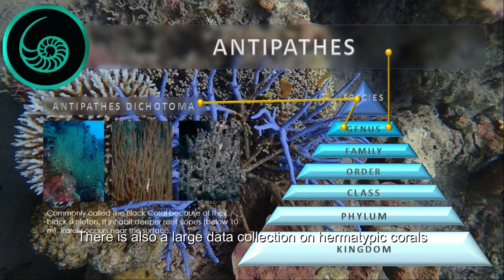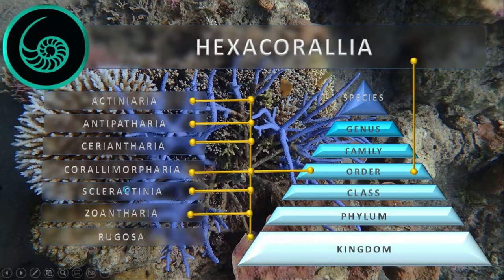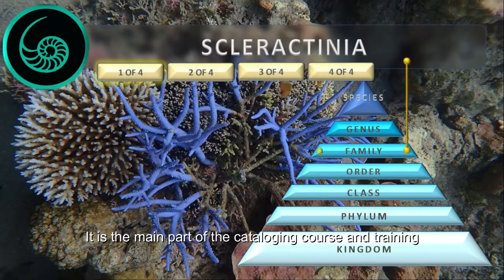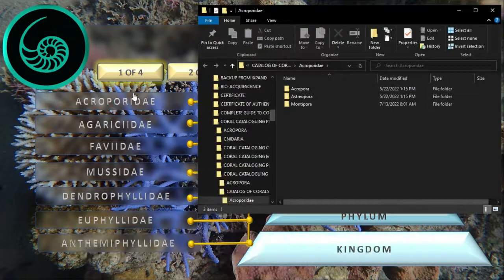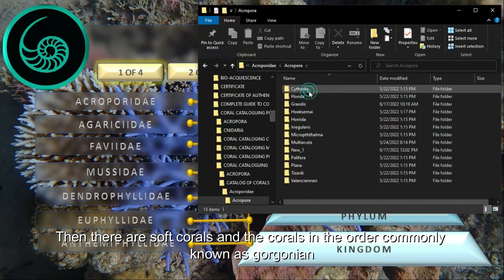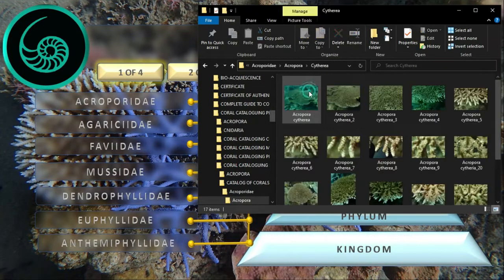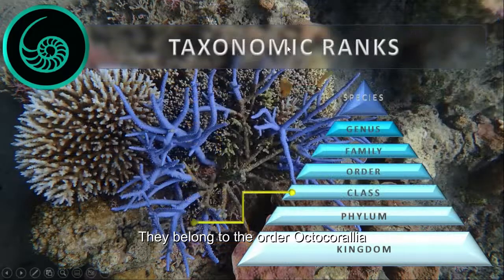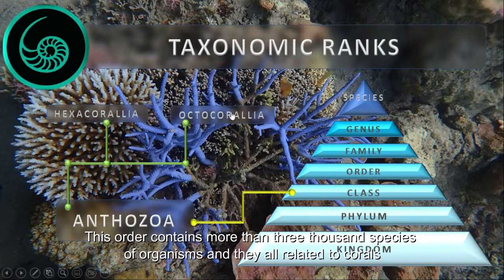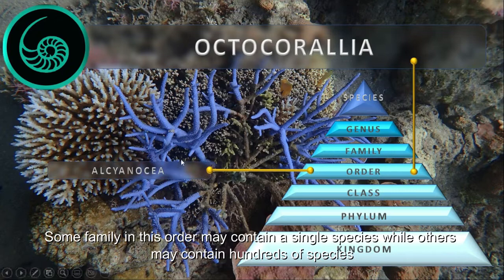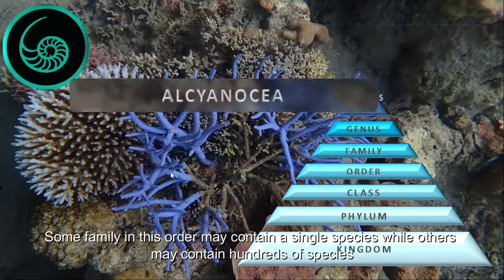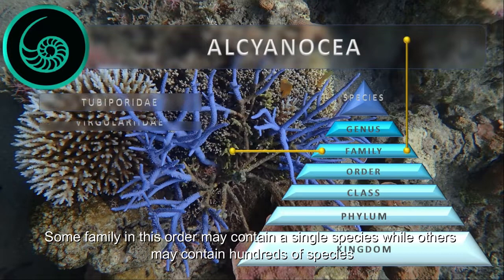There is also a large data collection on hermatypic corals. It is the main part of the cataloging course and training. A large collection of images and descriptions on the morphological structures of corals and the corallites is found here. Then there are soft corals and corals in the order commonly known as Gorgonian. They belong to the order called the Octocoralea, which contains more than 3,000 species of organisms, all related to corals. Some families in this order may contain a single species while others may contain hundreds.